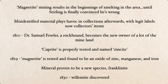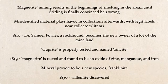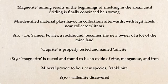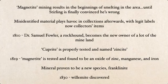What finally got things right was Dr. Samuel Fowler in 1810 — a local rockhound who married Rebecca Ogden and became the new owner of much of the mine land. He found that the red material really wasn't cuprite and tested it, discovering it was a new mineral named zincite. In 1819, a different individual tested the alleged magnetite and found it was actually an oxide of zinc, manganese, and iron — named franklinite. In 1830, the mineral willamite was also discovered in the region.